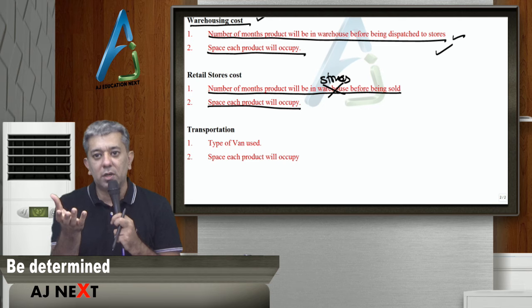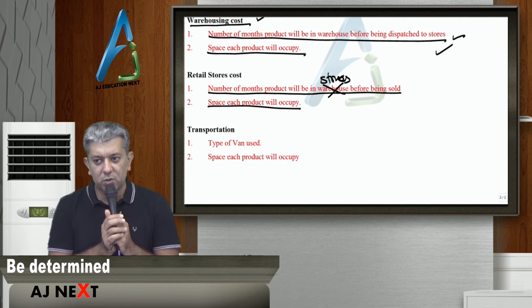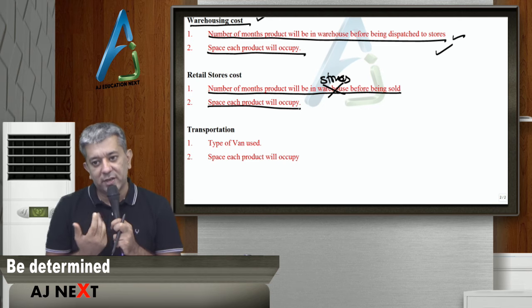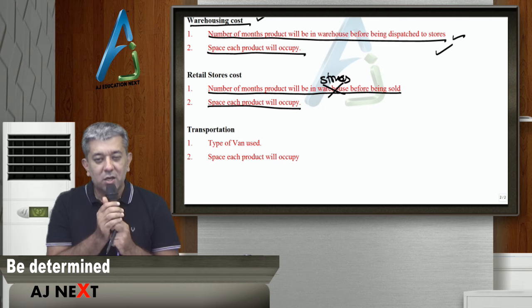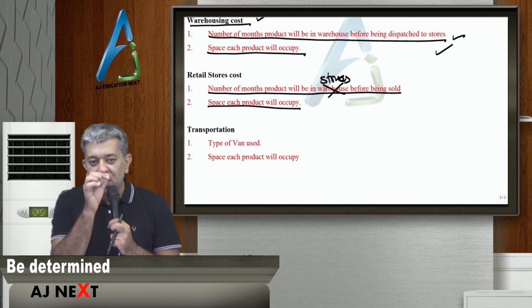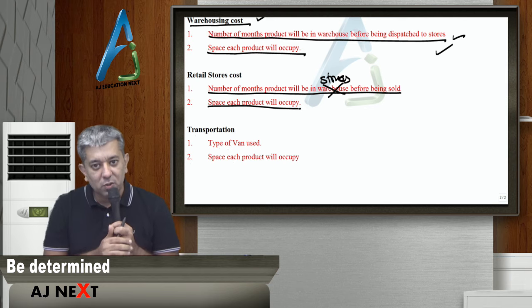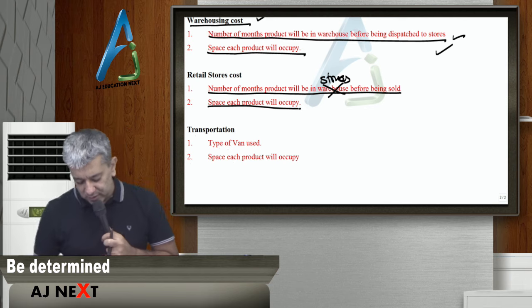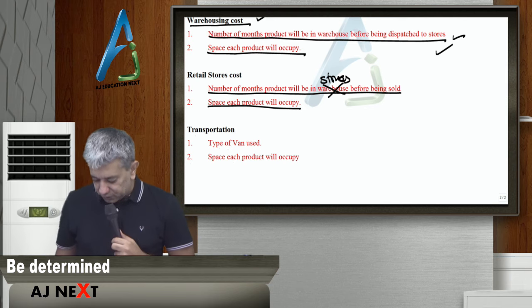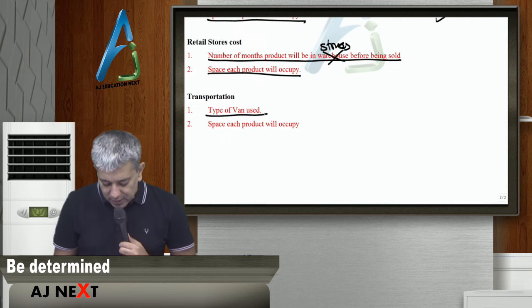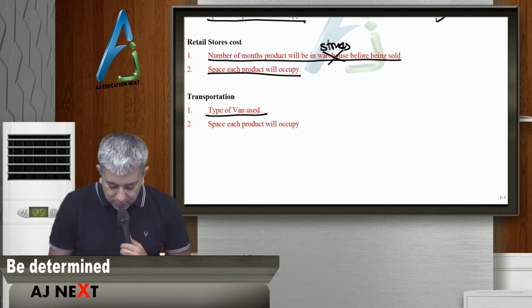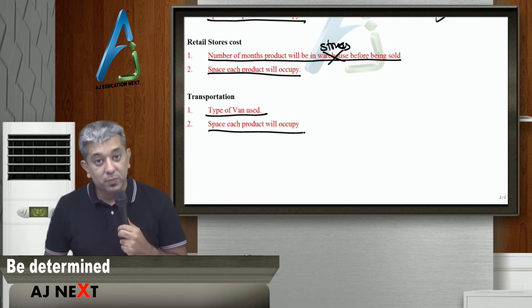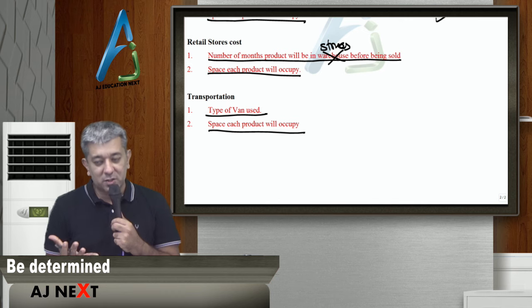Zara socho na, tum log demand jate ho, yahan big bazaar jate ho. Yahan jo reliance ke bhi, aaj kal jo stores vagera ho khule. Maha pe re goods racks ke upar woh pade hote hai. Agar koi product, zyada jaga lega, toh company soch sakta hai. Iske badle mein, woh wale products leke aate hai, jo kam kam jaga lete hai. Space is expensive here. Apart from that. Transportation cost. Type of van used, refrigerated van hai, ya nahi hai, etc. Space each product will occupy. Obviously, space toh har jaga pe aayega. Space is very expensive.